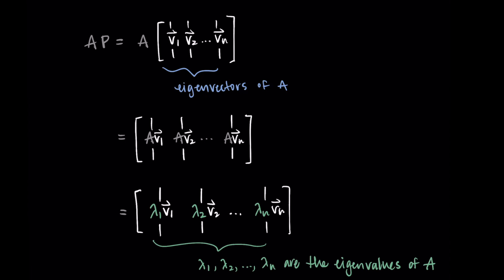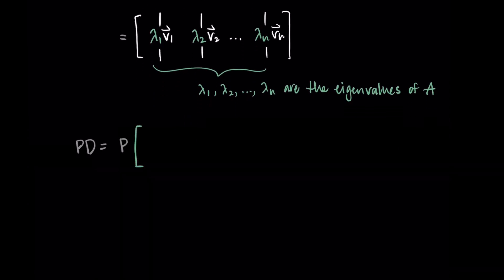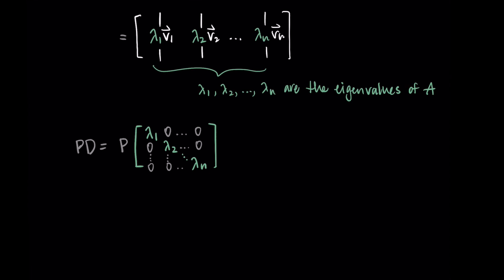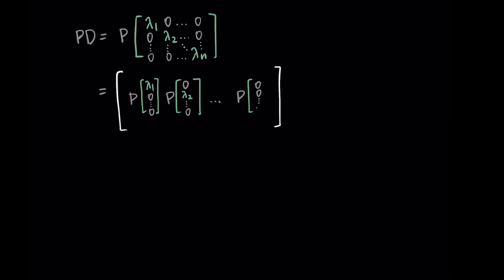Hopefully you can follow through this process and see how we're rewriting A times P as that matrix. Now let's look at P times D. Remember, we're trying to show that A times P equals P times D — that would mean A is diagonalizable. P times D: D is special in that it has the eigenvalues on the diagonal. Breaking the multiplication into columns, the first column is P times the vector with lambda 1, the second is P times the vector with lambda 2, and so on through lambda n.